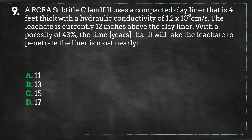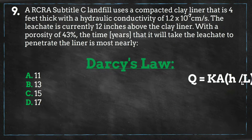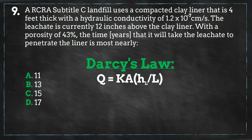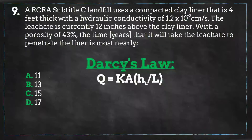The equation for Darcy's law is based on the observation that the flow rate through a porous medium, such as an aquifer, is proportional to the cross-sectional area perpendicular to flow and is also proportional to the head loss per unit length in the direction of flow. Putting these two proportionalities together gives us the following equation.